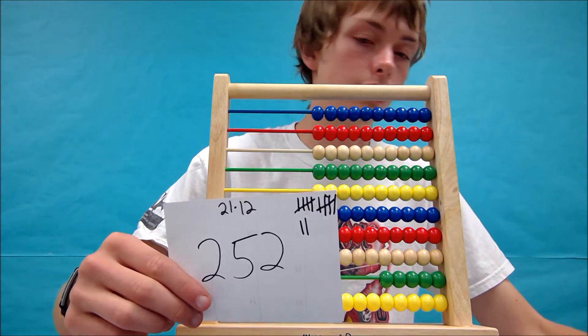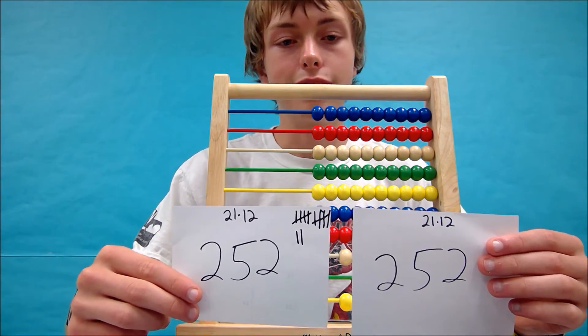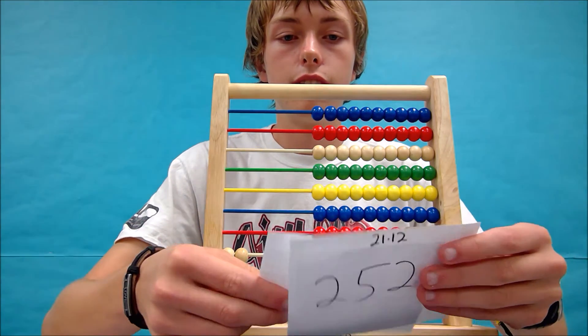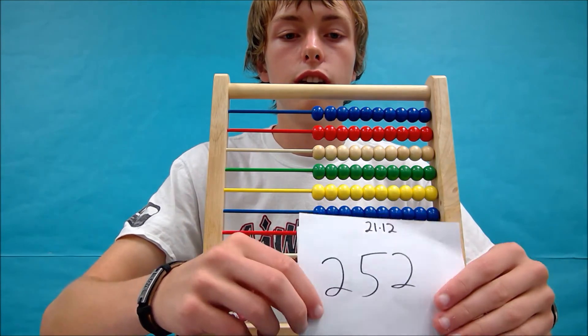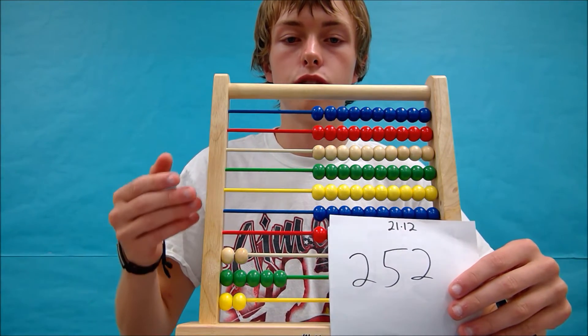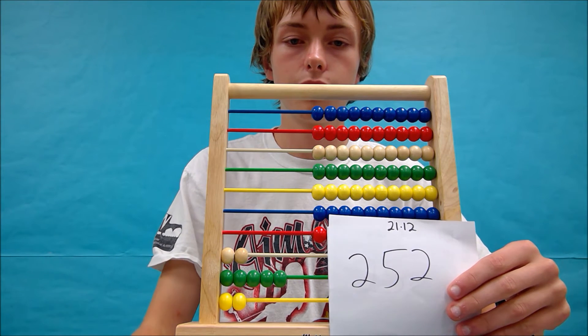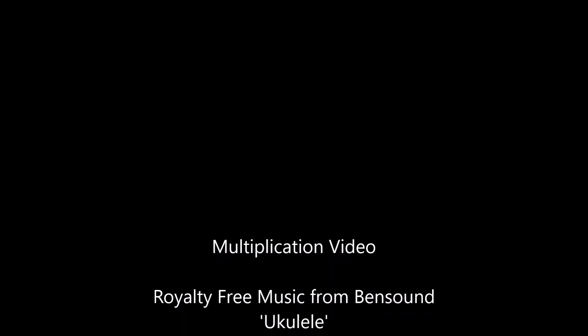Now if we look at our answer from the last sheet, they're the same thing, just different ways to get there. So your answer should be 252, and your abacus should look like this. Thank you.